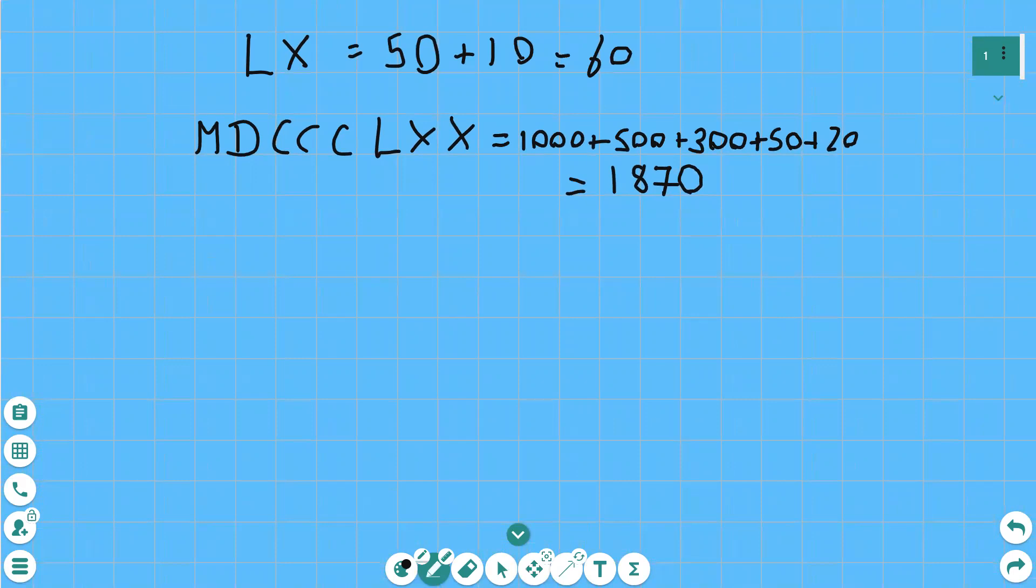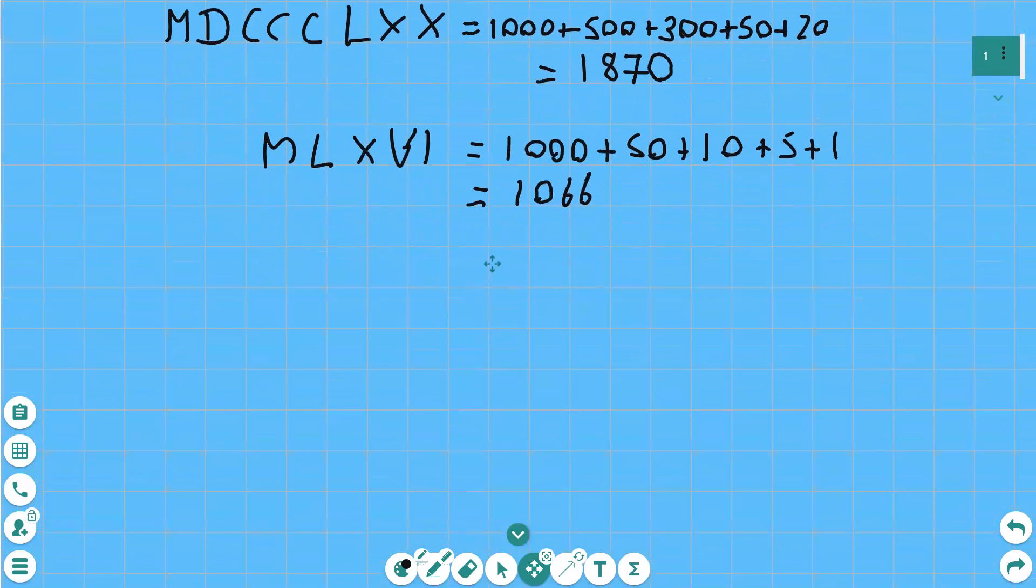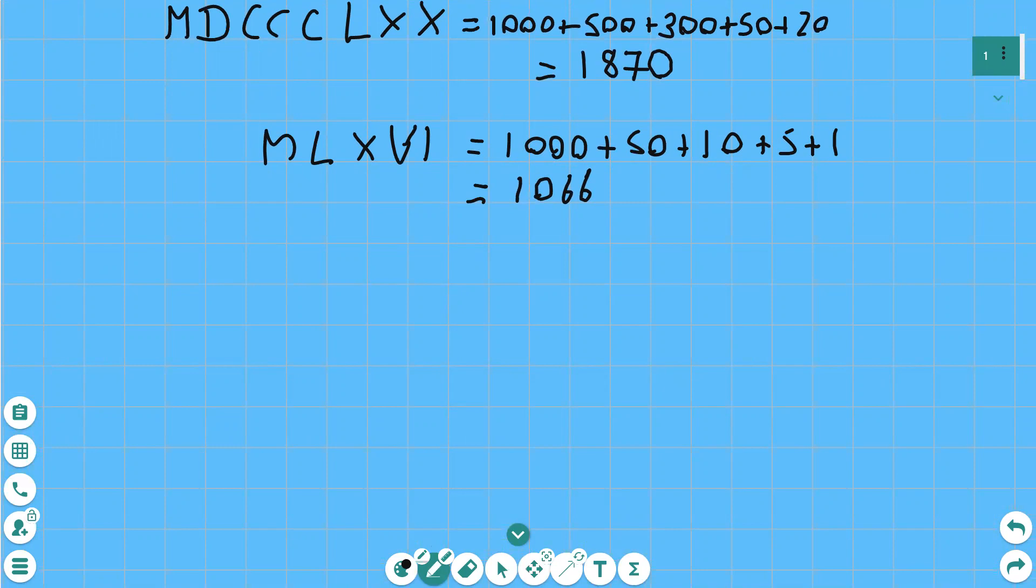So let's do another one. MLXVI. M is 1,000. L is 50. X is 10. V is 5 and I is 1. So that's 1,000, 1,050, 1,060, 1,065, 1,066. Yeah that's correct isn't it. Oh and guess what date that is. That's when the Normans invaded England. 1066 the Battle of Hastings.